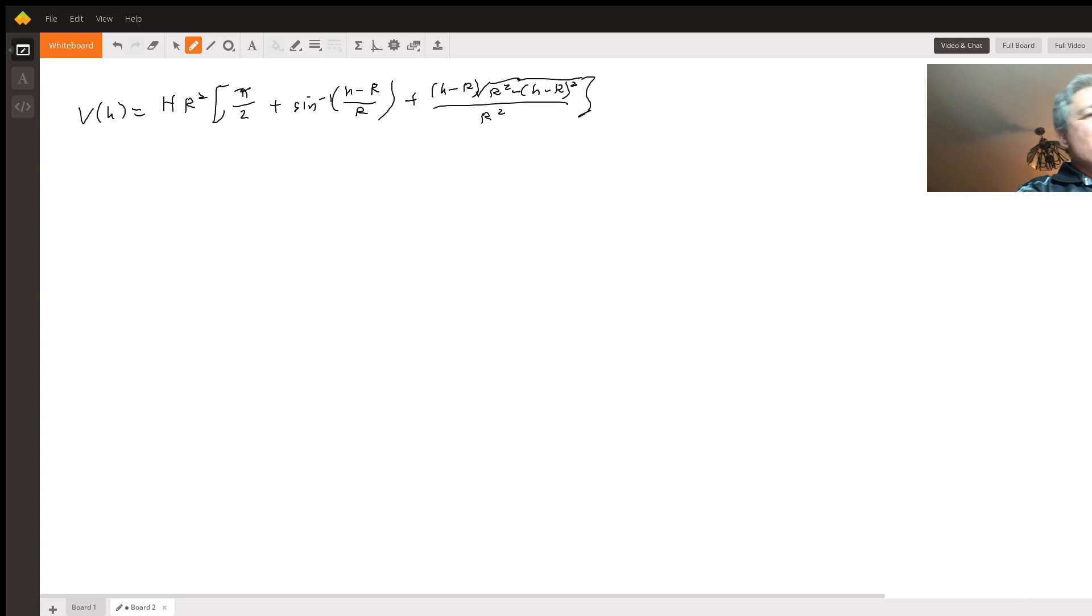The key is we want to take the ratio of V of h to the total volume, which is pi big R squared h. It turns out that these would cancel out, so you could actually normalize the curve.